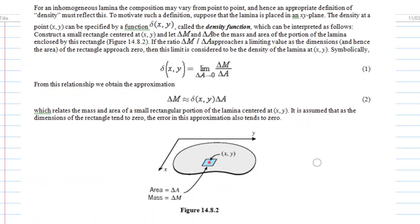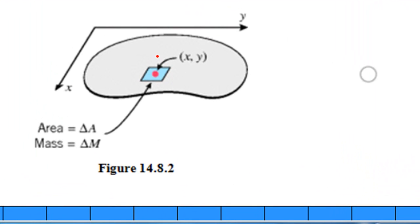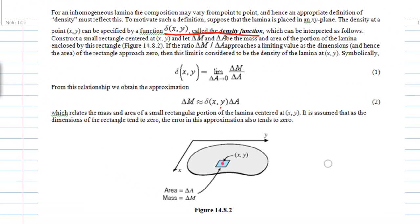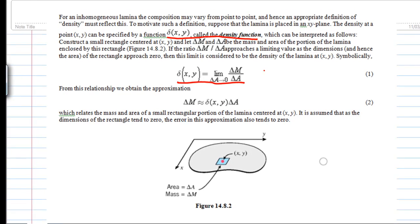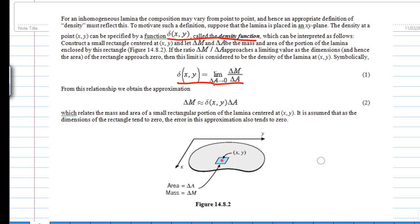What happens if the lamina is inhomogeneous? That means the density is different at different points, so there is a density function delta(x, y). If you look at a small little area and compute its mass — let's say the mass of this small area is delta m, the area is delta a, and the density at this point is delta(x, y) — then delta(x, y) is the limit of delta m over delta a as delta a goes to 0.